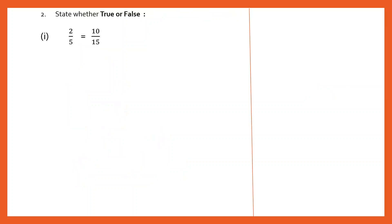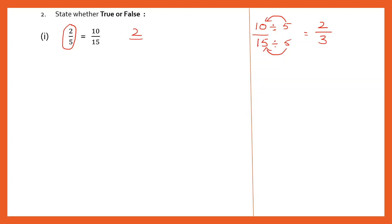Question 2: State whether true or false. We are going to use the same system of reducing the fractions to the lowest term. The first fraction is 2 by 5, which is already in the lowest term. The second fraction is 10 by 15. Let's reduce that — dividing both by 5. 5 twos are 10 and 5 threes are 15, so we get 2 by 3. So the fractions are 2 by 5 and 2 by 3, and the statement says they are equal. They are not equal, so the first statement is false.